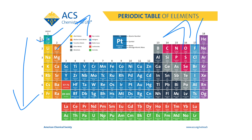The 17th group elements are called halogens because of their halide, salt-forming nature. The 18th group elements are called noble gases because of their nobility and non-reactive nature.